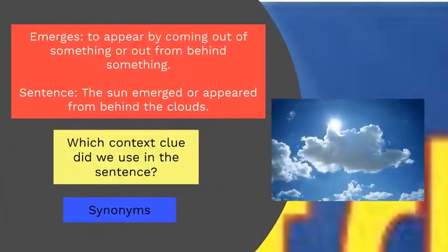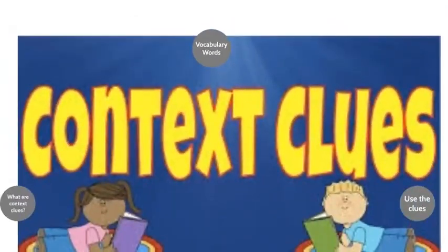Lastly, we have emerges. Emerges means to appear by coming out of something or out from behind something. Here's a sentence: 'The sun emerged, or appeared, from behind the clouds.' The words emerged and appeared are synonyms — words that share the same meaning. So the context clue that helped us understand what emerged means is the word appeared. Good job, third graders! I hope you enjoyed the lesson. Have a great day.